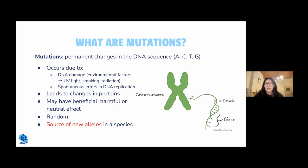Mutations are permanent changes in the DNA sequence. They can occur due to damage to DNA from factors such as UV radiation from the sun or smoking, and can also occur spontaneously during DNA replication, when enzymes occasionally make mistakes. A change in the DNA sequence leads to a change in the protein produced. This change can be beneficial, harmful, or neutral depending on the nature of the mutation. Mutations are random — you can't choose what mutation occurs.